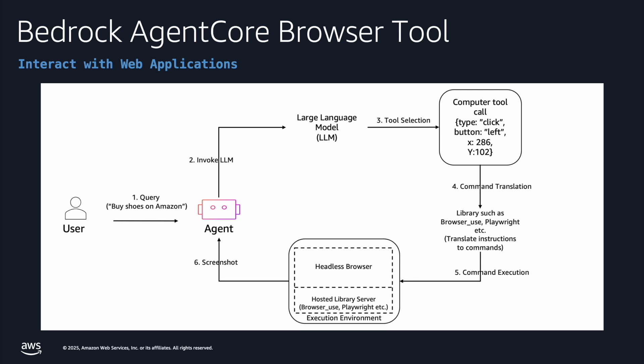AgentCore Browser Tool provides a comprehensive, fully managed browser-based environment that enables agents to interact with web interfaces through natural language commands and automated actions. When you provide an agent with a complex query like 'buy shoes on Amazon', the system processes the request by first invoking the LLM to understand the intent, then utilizing specialized browser automation tools that can translate high-level instructions into specific browser commands and interactions.